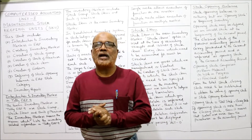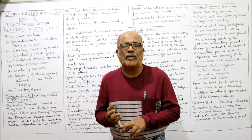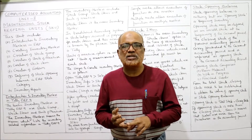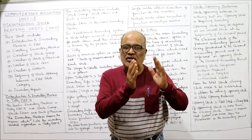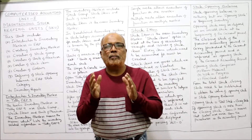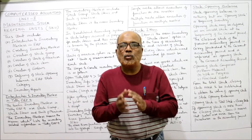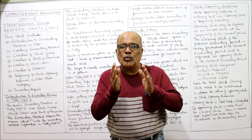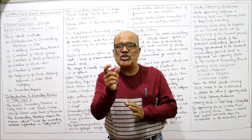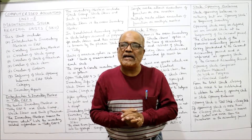In the first unit of computerized accounting, I have explained you in detail regarding the meaning of computerized accounting, advantages, limitations, objectives and the differences between computerized accounting and manual accounting. Then how to maintain the chart of accounts, how to create the company, how to shut the company, how to open the company and how to find out the features or how to alter the company details, company configuration.